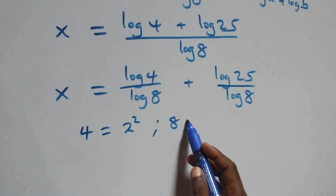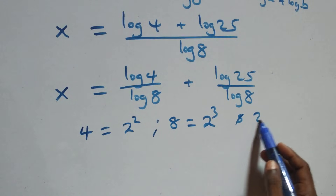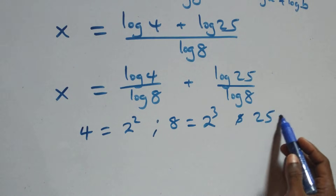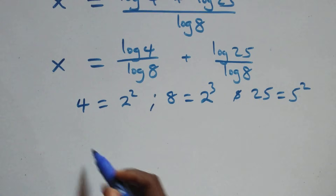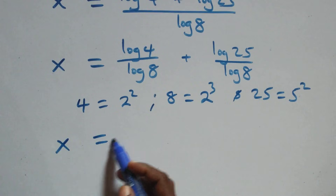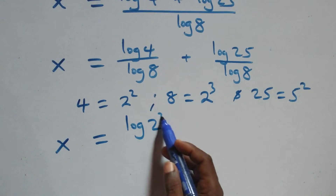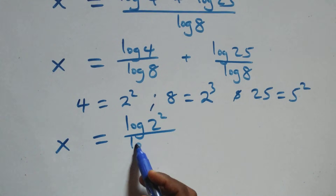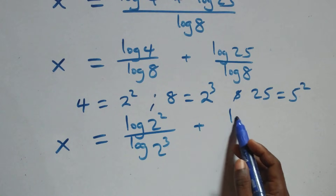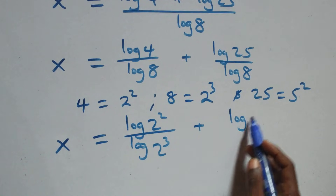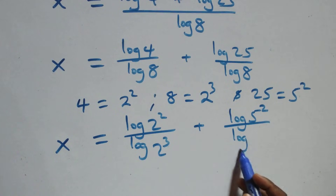We write 4 as 2 times 2, which is 2 squared; 8 as 2 times 2 times 2, which is 2 cubed; and 25 as 5 times 5, which is 5 squared. So what we have here becomes x equals to log of 2 squared over log of 2 cubed plus log of 5 squared over log of 2 cubed.